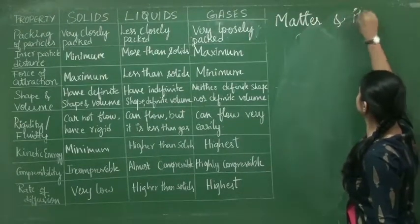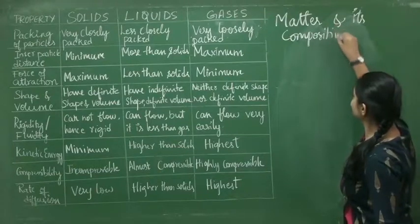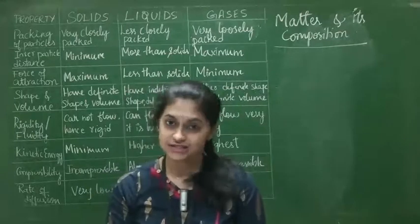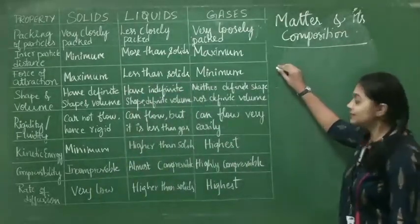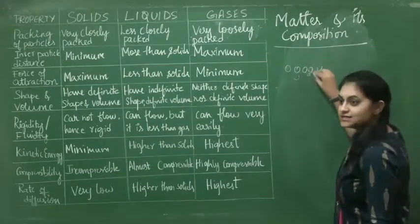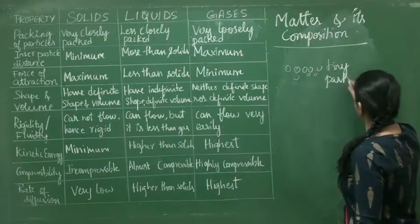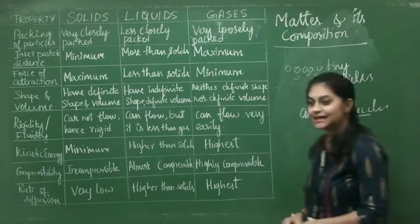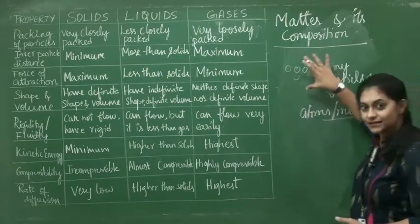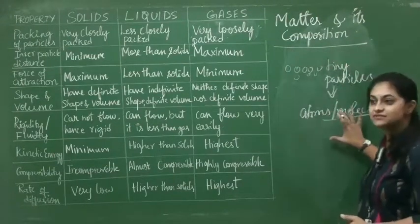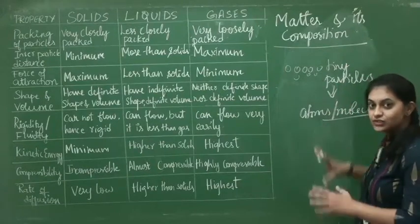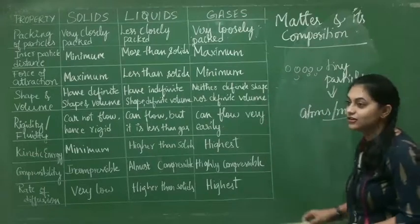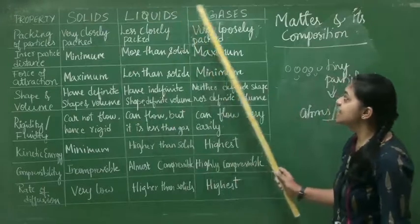So today's class we will be discussing more about matter and the chapter name is 'Matter and its Composition' — a very important chapter. Now you all have understood what is matter: anything that occupies space and has mass is called matter. Furthermore, matter is made up of tiny particles called as atoms or molecules. You will learn more about atoms and molecules in coming sessions.